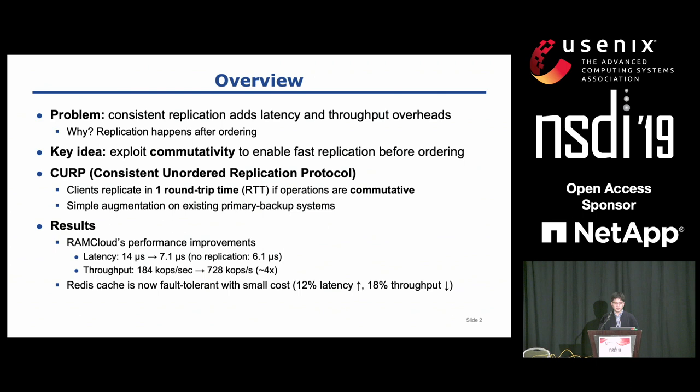CURP is a simple augmentation on existing primary backup systems, but I believe it can also be extended to Quorum-based consensus protocols as well, and the paper sketches some ideas on that. I implemented CURP on RAM Cloud and Redis storage systems, and on RAM Cloud, CURP halved the latency and quadrupled the throughput, which is almost as good as no replication.